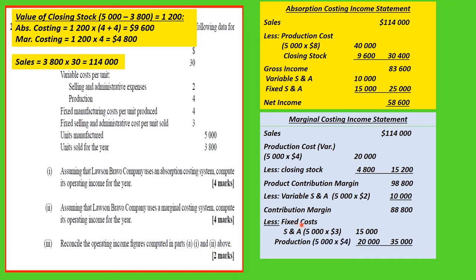The fixed selling and administration costs are 5,000 by $3, and fixed production costs are 5,000 by $4. Adding the two together we get $35,000. Taking $35,000 from $88,800 gives us a net income of $53,800 under marginal costing.